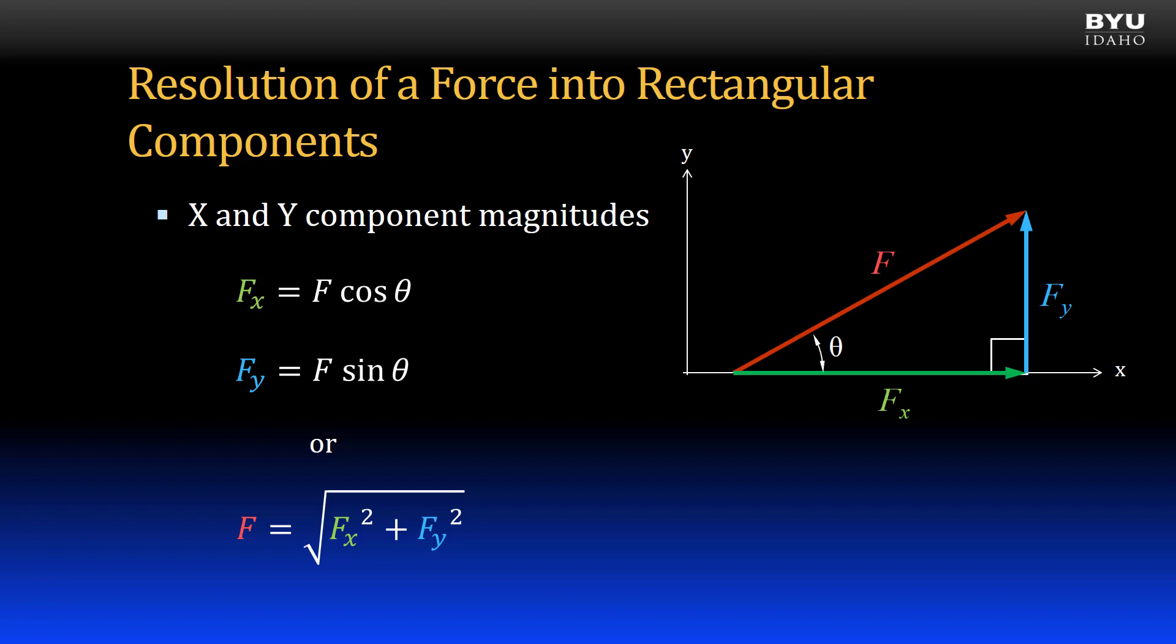Let's suppose that instead of the angle theta, we have the angle alpha instead. Because alpha is adjacent to the y-direction leg, finding the x and y components is slightly different from before. To find F sub x, which is opposite of alpha, we use F times the sine of alpha.